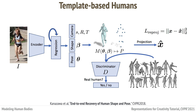Computer graphics researchers have been developing animatable body templates for decades. A template is usually in the shape of a naked body, together with a set of weights called rigging, which describes the relationship between the shape with regard to the pose. The template's actual sizes and poses can be controlled via a set of parameters. While most prior work fits the template to a certain input by optimizing these parameters towards predefined energy terms, some recent work utilizes a neural network to directly infer these parameters.